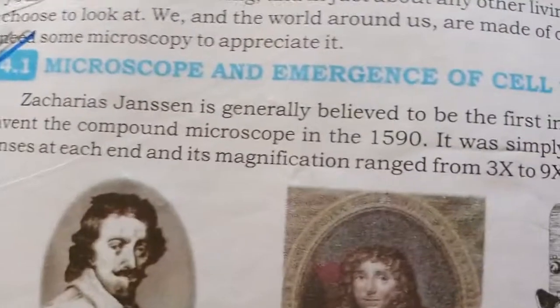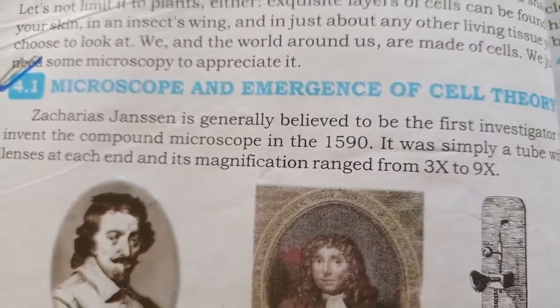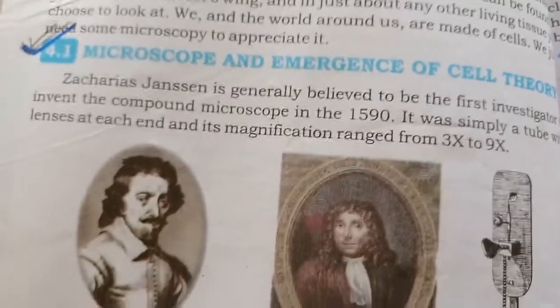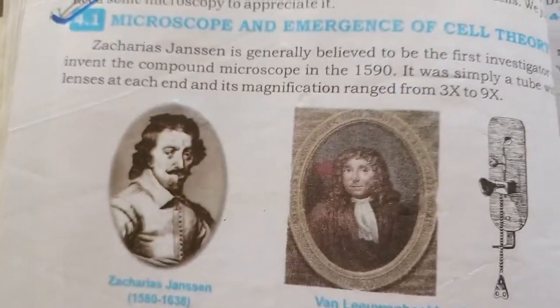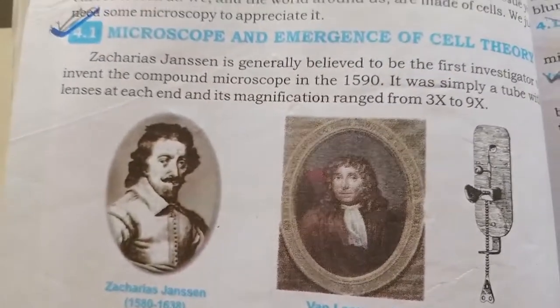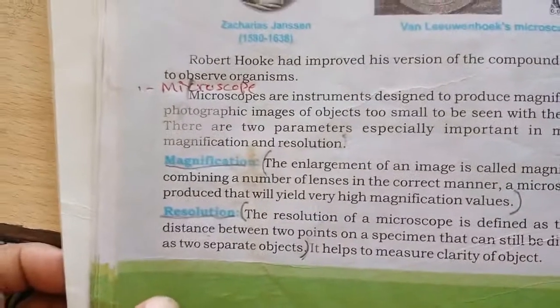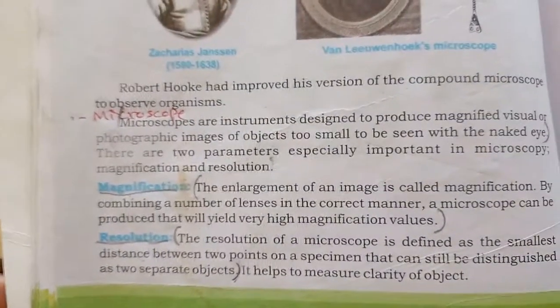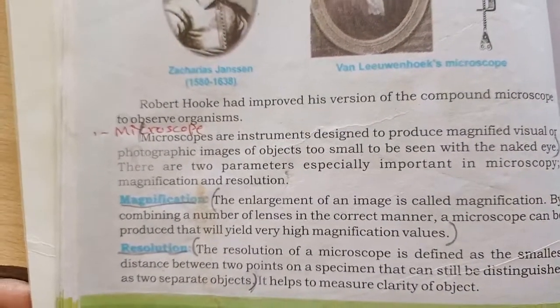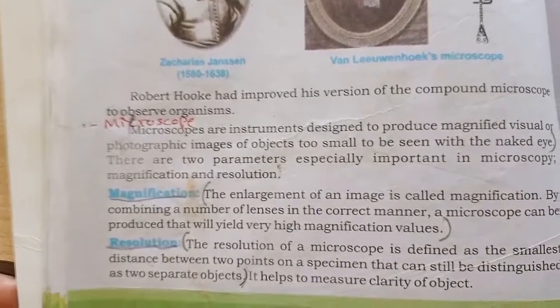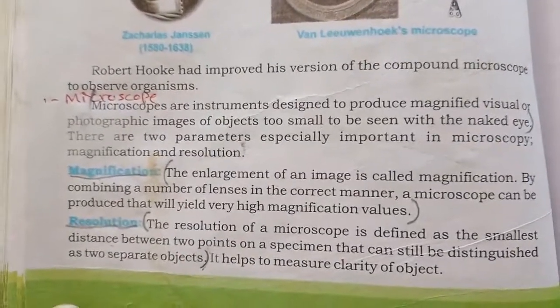Page number fifty-seven: Microscope and emergence of cell theories. First of all, what is the meaning of microscope? Microscopes are instruments designed to produce magnifying visual or photographic images of objects too small to be seen with the naked eye.